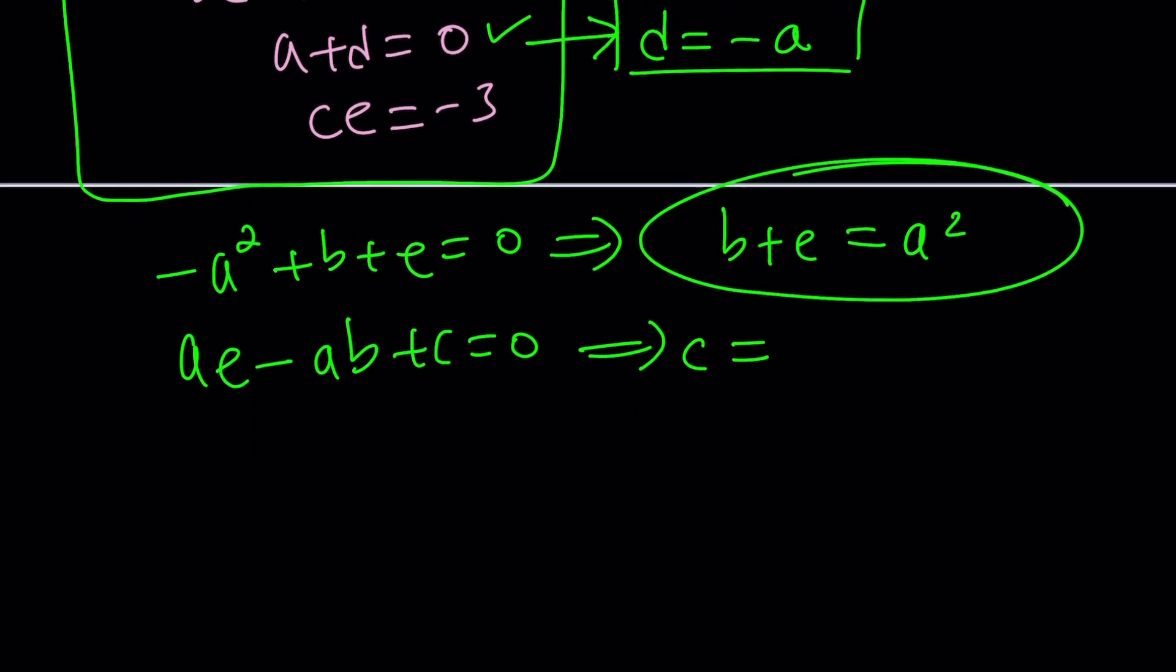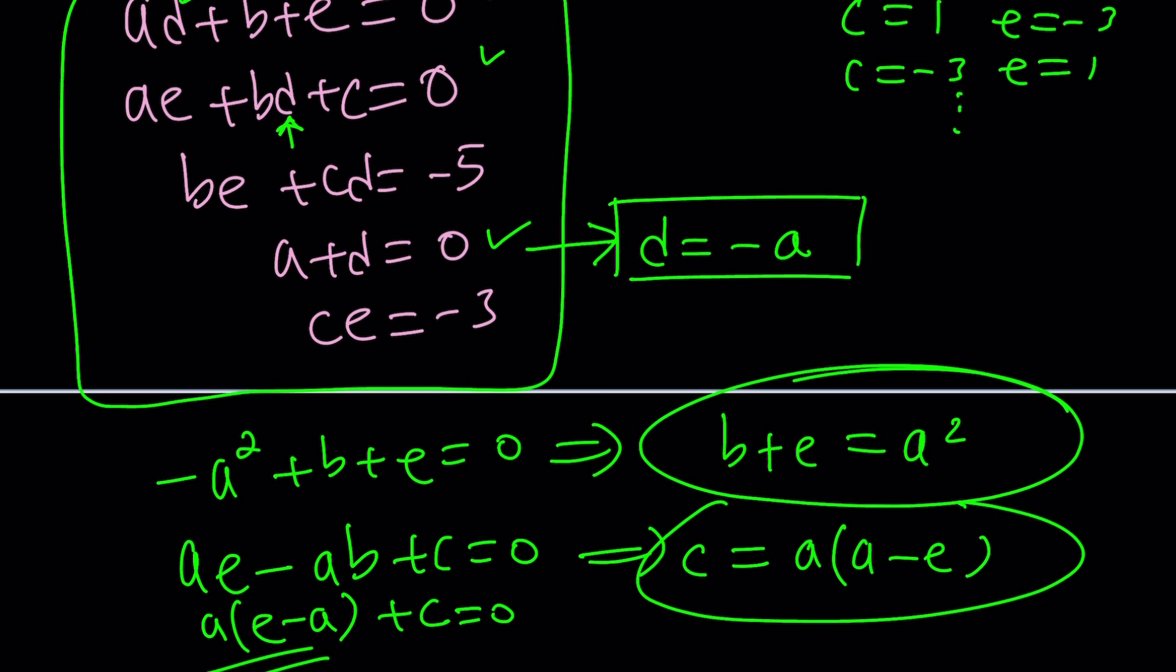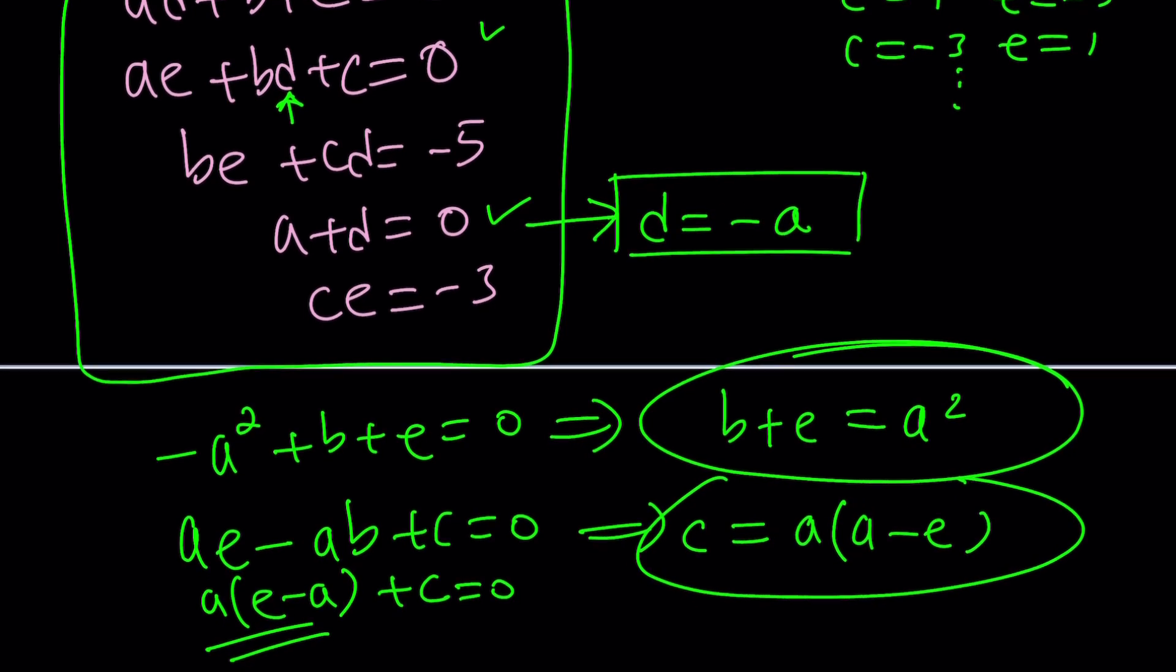You're going to get ae minus, notice that it's going to be minus ba or ab. It's probably better to write it as ab. And then plus c equals zero. And from here, you could probably do the following. Factor out an a here. It says (e - b)a plus c. And then negate this. So you can put it on the right hand side, which will become a times (a minus e). That's just another equation I might use.